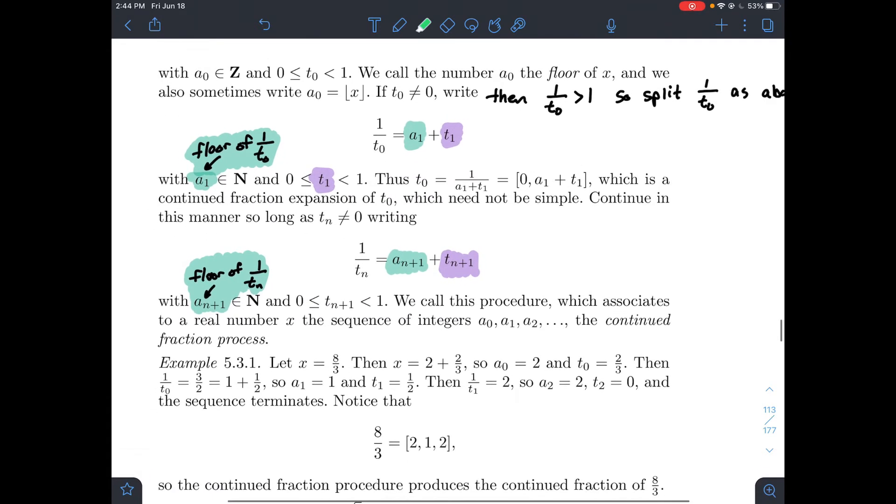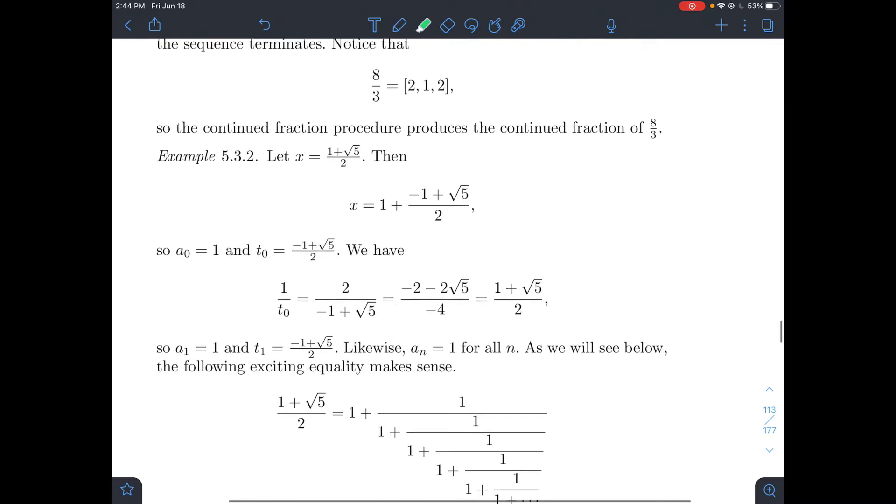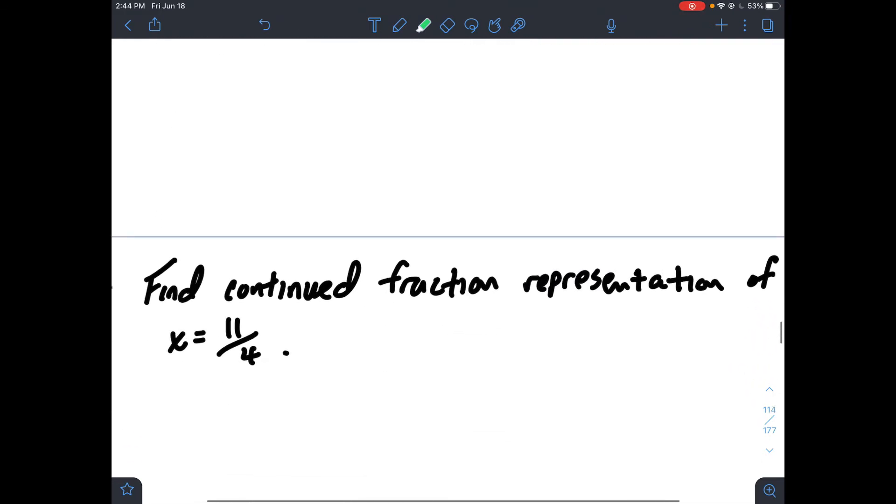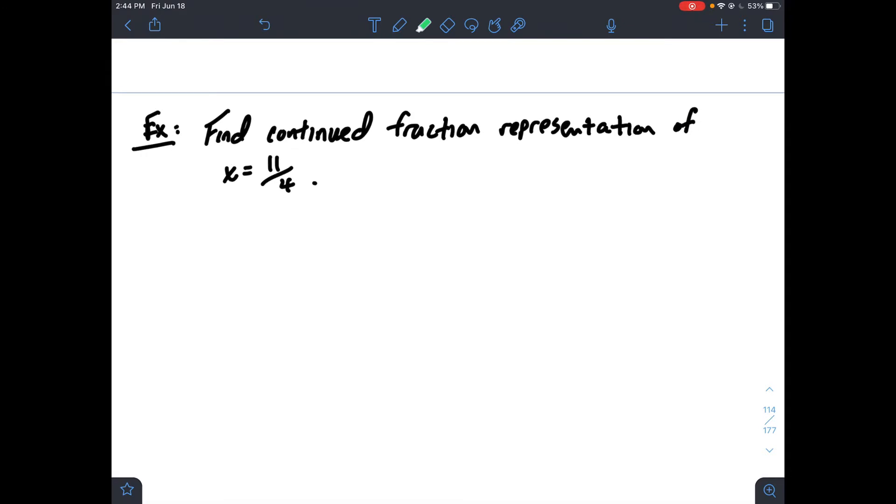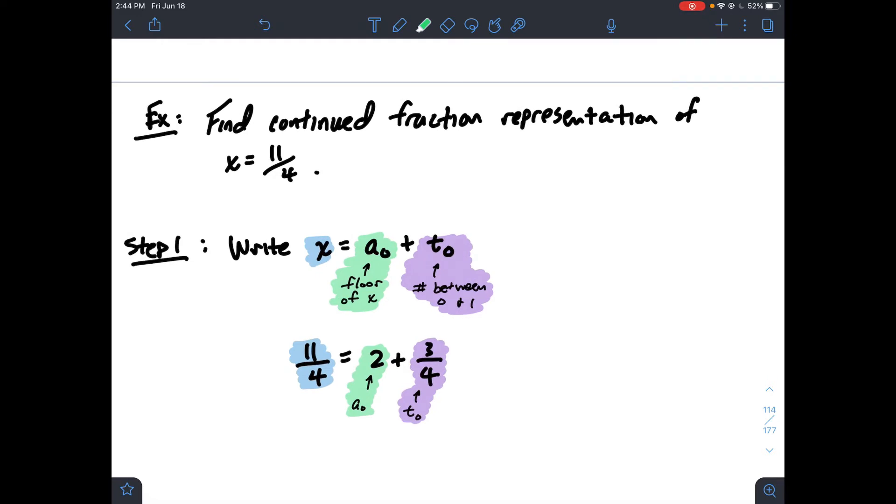Let's try to find the continued fraction representation of x equals 11 fourths. I'm going to break this up into some steps. Step one is to take my x and write it in the form a0 plus t0. 11 fourths, the floor is 2, that's the biggest integer that's less than or equal to 11 fourths, plus 3 fourths left. So a0 is 2, and t0 is 3 fourths.